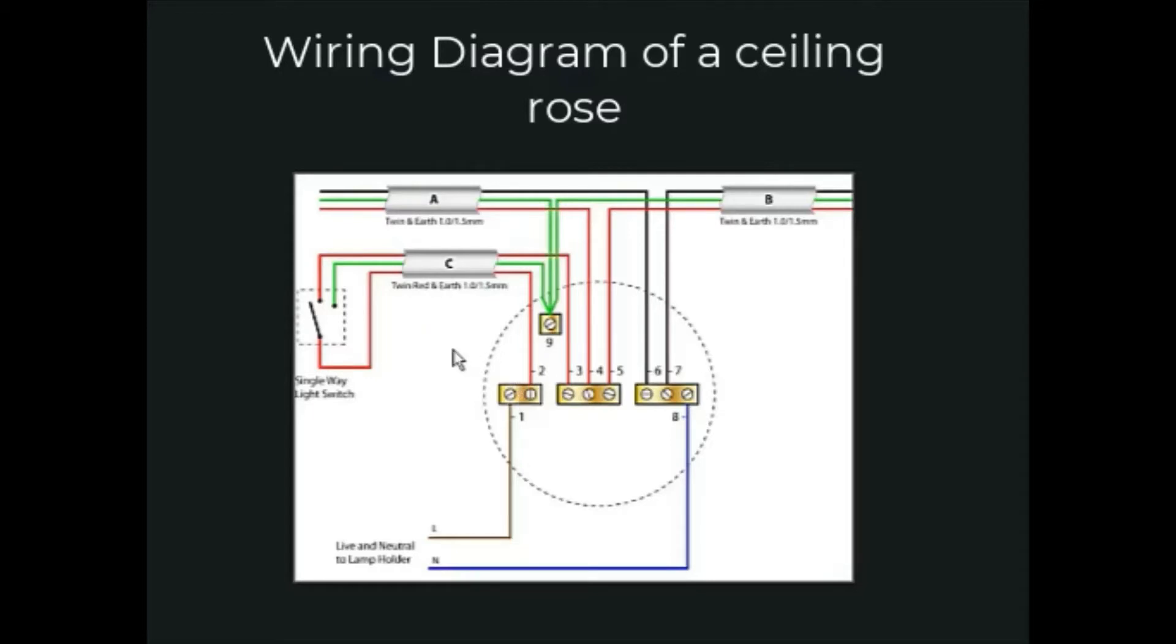Cable A loops into the ceiling rose from either the fuse board or another light. Cable B loops out of the ceiling rose to the next light fitting. Cable C is the switch live cable.